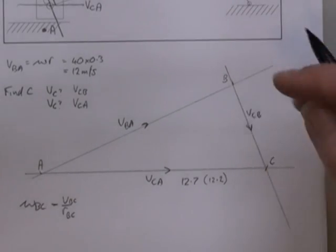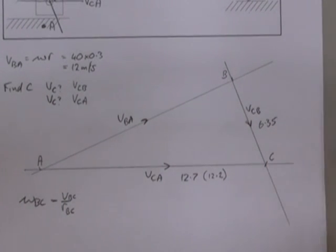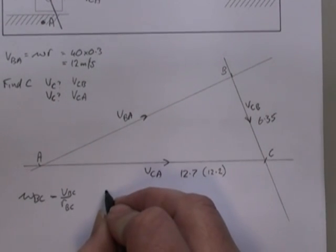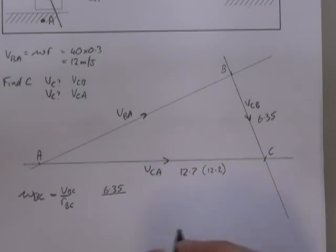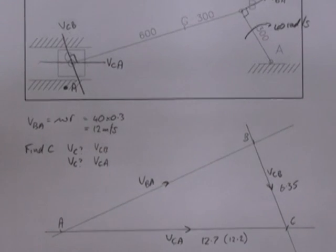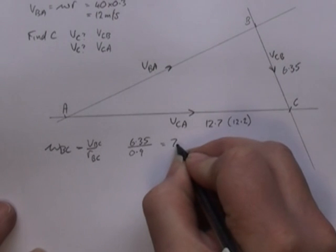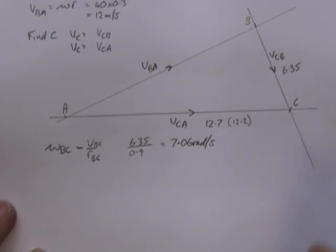VBC, measure that. This one comes out at 6.35. So omega BC will be equal to VBC, 6.35 over radius BC. BC is 900 millimeters long, over 0.9, giving me 7.06 radians per second.